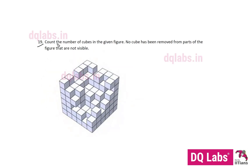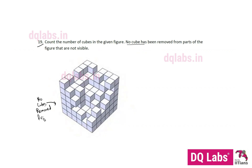Question number 19: count the number of cubes in the given figure. No cube has been removed from parts of the figure that are not visible. So what we should do in this question is count the number of cubes in this whole figure. Only from this view are cubes removed — from behind, no cubes are removed.